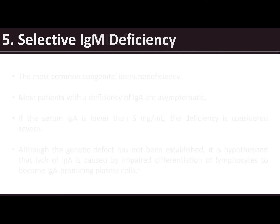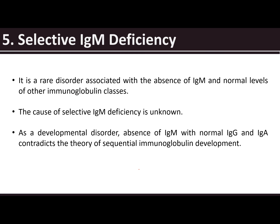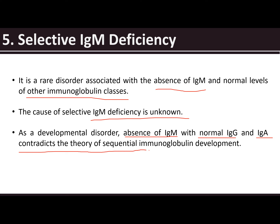Although the genetic defect has not been established, it is hypothesized that lack of IgA is caused by impaired differentiation of lymphocytes to become IgA-producing plasma cells. Then we also have selective IgM deficiency — a rare disorder associated with the absence of IgM and normal levels of other immunoglobulin classes. The cause is unknown.